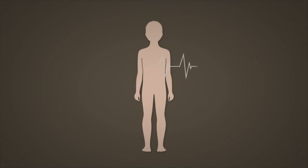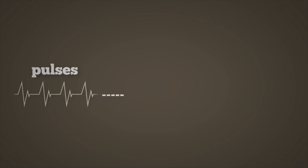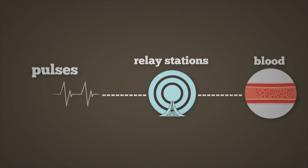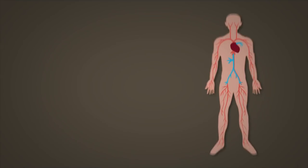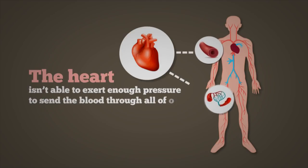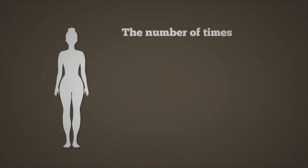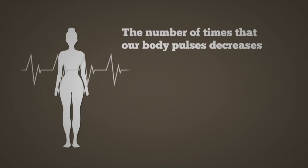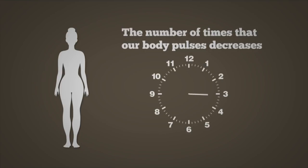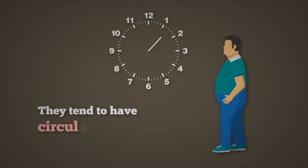When we're young, our body pulses about three to five times per minute, and these pulses work like relay stations to help the blood flow through the body. This is necessary because the heart isn't able to exert enough pressure to send the blood through all of our blood vessels. As we get older, the number of times that our body pulses decreases, and instead of pulsing three to five times per minute, it pulses about once a minute. Folks with diabetes only pulse about once every ten minutes, and this is why they tend to have circulatory problems.